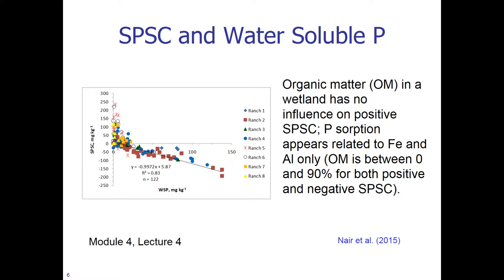Now let us look at the relationship between SPSC and water-soluble P. Water-soluble P is on the x-axis and SPSC is on the y-axis. This is a graph generated from eight beef ranches within the Okeechobee basin. Note that organic matter in a wetland has no influence on positive SPSC — P sorption is related to iron and aluminum only. In this particular example, organic matter is between zero and 90 percent for both positive and negative SPSC. When SPSC is positive, any additional P released by the organic matter will be held by the soil.